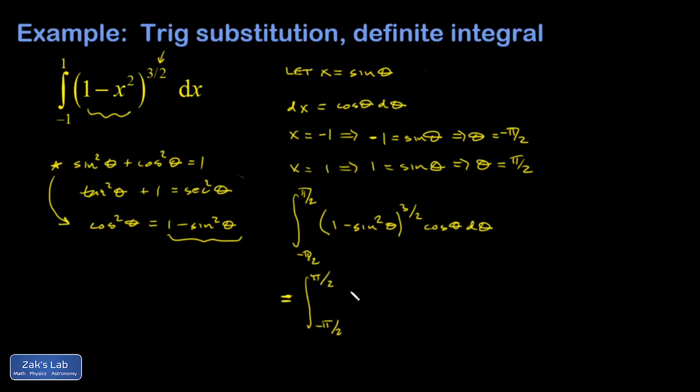So this is actually cosine squared to the 3 halves, cosine theta d theta. Things are going to get real ugly now. I put this one in here because it involves the half angle identities. The square root of cosine squared is just cosine, and then I raise it to the third power. That's what the 3 halves means. So I have cosine cubed times cosine, which gives me cosine to the fourth.